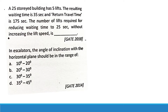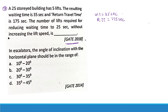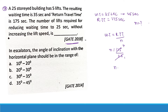This question was from Gate 2018: A 25-storey building has five lift units. The resulting waiting time is 35 seconds and the return travel time (RTT) is 175 seconds. The number of lifts required to reduce waiting time to 25 seconds without increasing lift speed is calculated as: WT = RTT / n, so n = 175 / 25 = 7. The answer is 7.